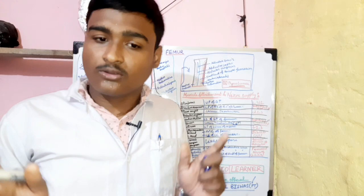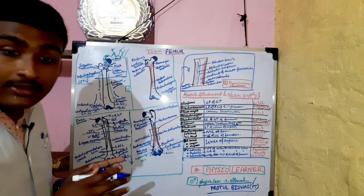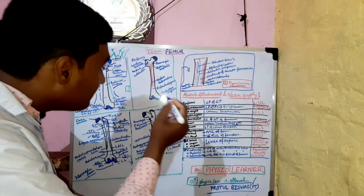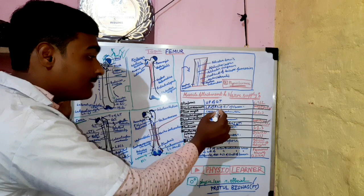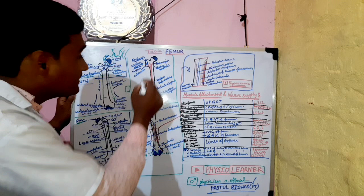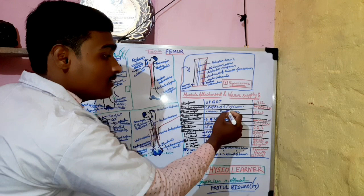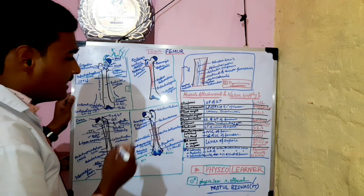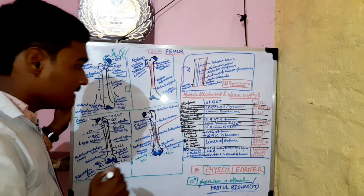Regarding muscle attachments: piriformis inserts into the upper part of the greater trochanter. Gluteus minimus attaches to the lateral part of the anterior surface of the greater trochanter. Vastus lateralis is also noted here. Psoas major inserts with the lesser trochanter.